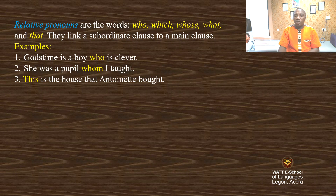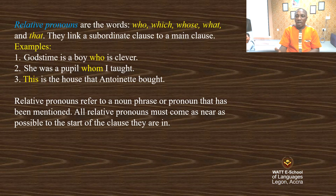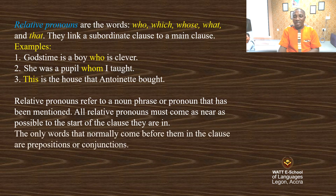Now, relative pronouns refer to a noun phrase or pronoun that has been mentioned. All relative pronouns must come as near as possible to the start of the clause they are in — they should come as close to the sentence that they are in. The only words that normally come before them in the clause are a preposition or conjunction.